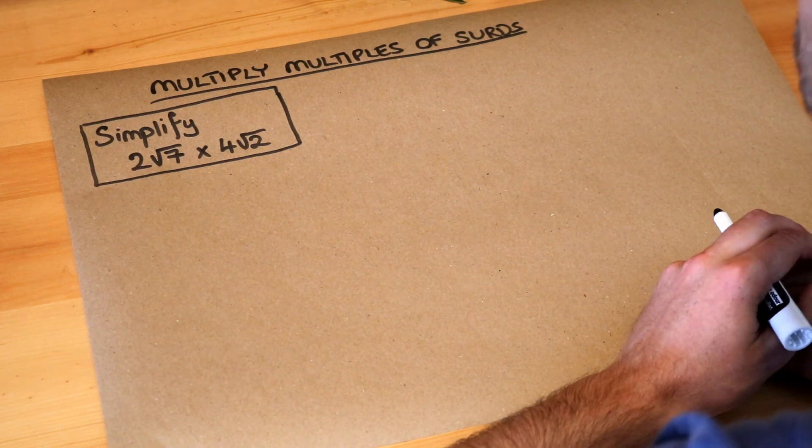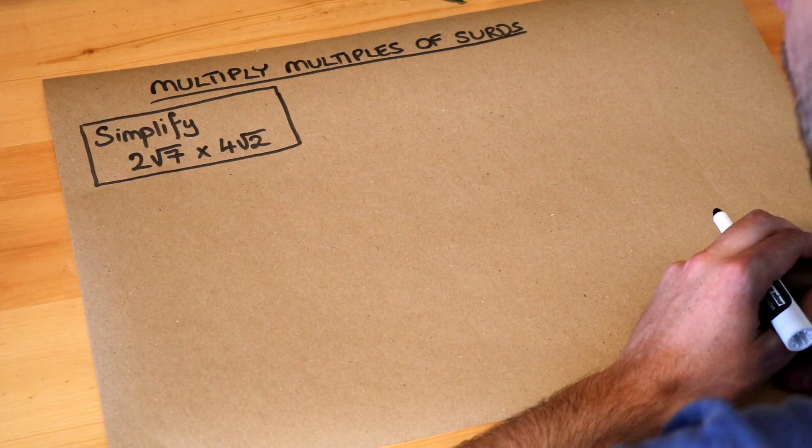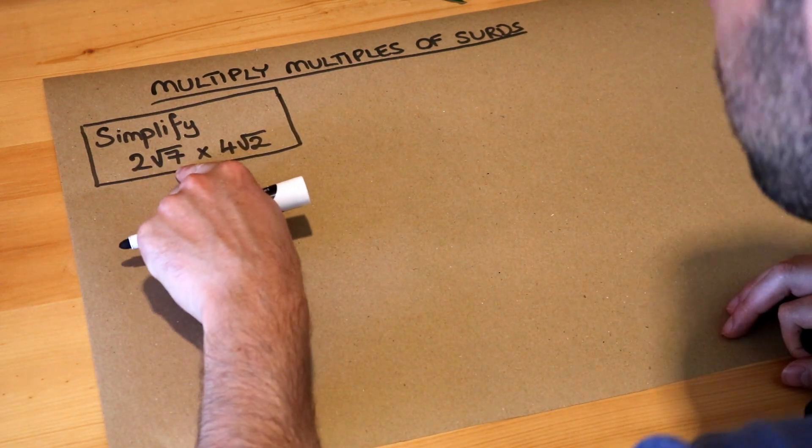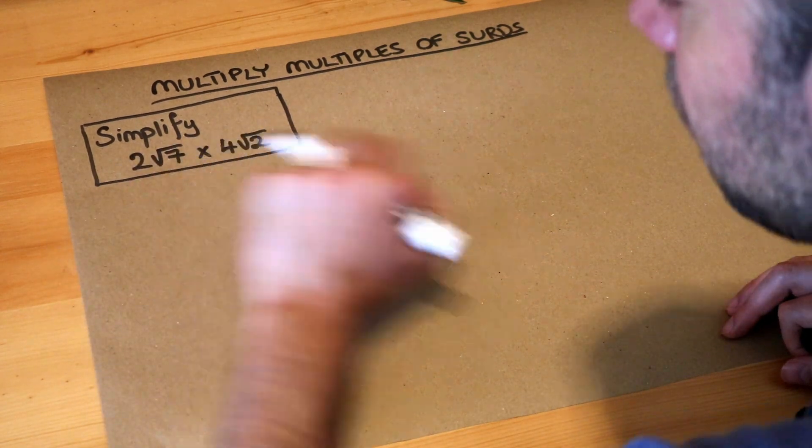Hello and welcome to this Dr. Frost video on multiplying multiples of surds. By multiples of surds I just mean we have like two lots of root seven or four lots of root two, rather than just root seven times root two.